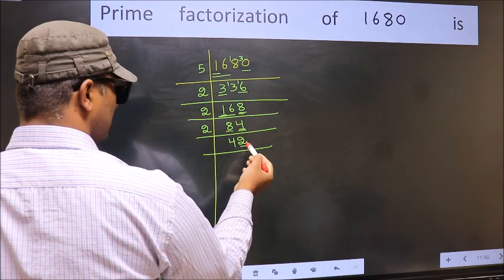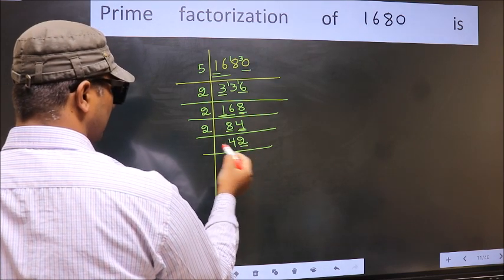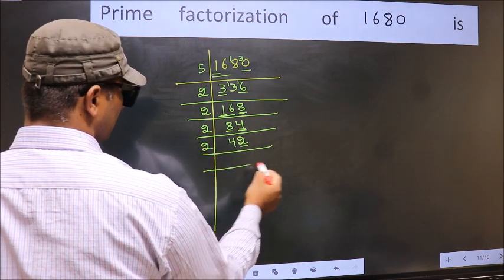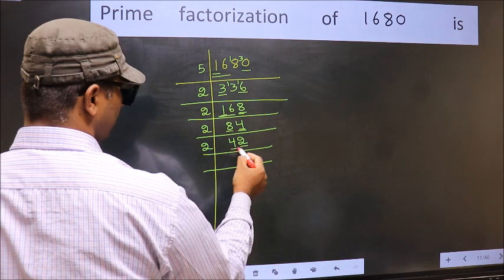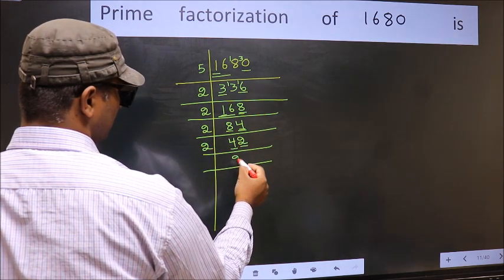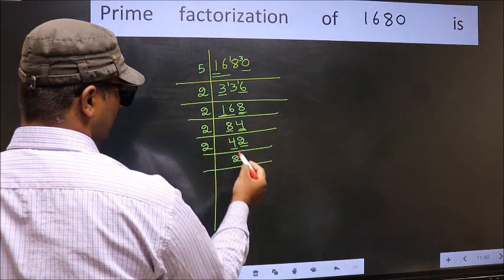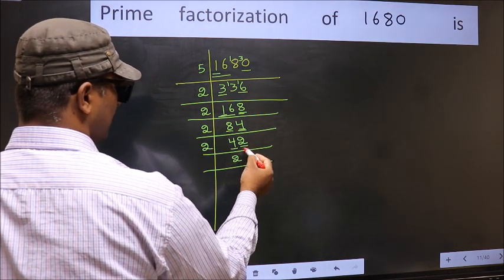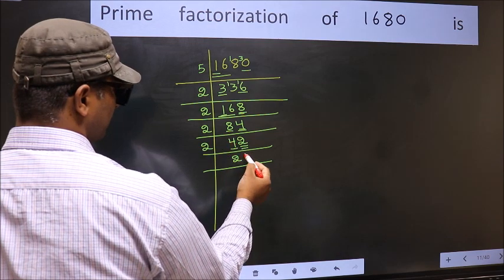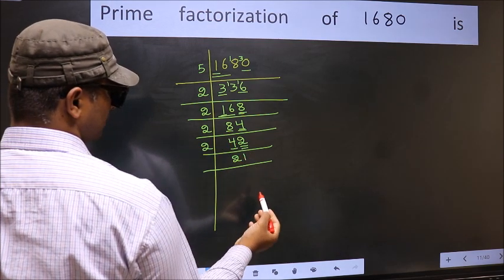Now the last digit is 2, even, so take 2. First number 4. When do we get 4 in the 2 table? 2×2=4. The other number is 2. When do we get 2 in the 2 table? 2×1=2.